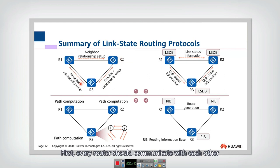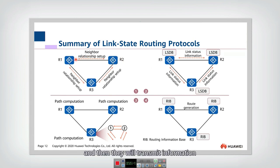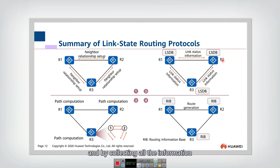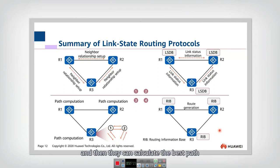This is the summary of link state routing protocols. First, every router should communicate with each other to set up neighbor relationships. Then they transmit information to collect the cost on each link, or the link state of each link. After the link state is calculated, they send link state advertisements to neighbors. By collecting all the information, they maintain the link state database, form a graph of the network, calculate the best path, and write the best path into the routing information base.